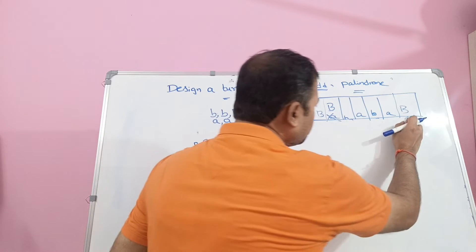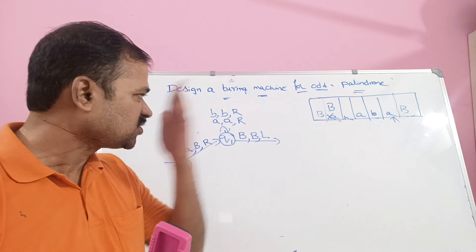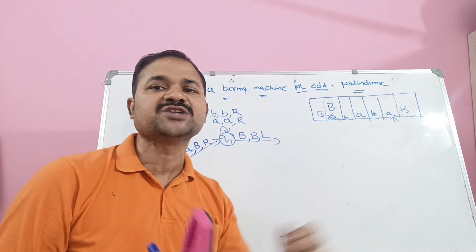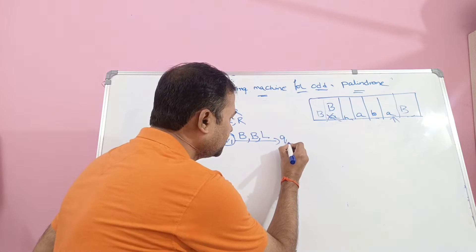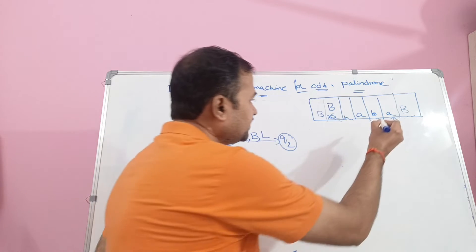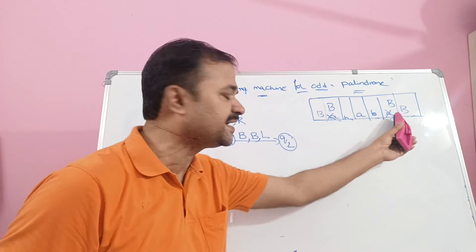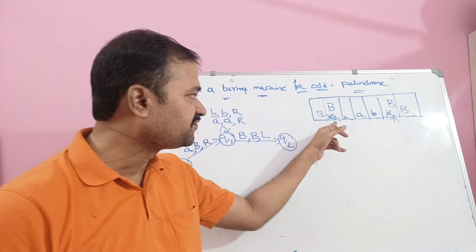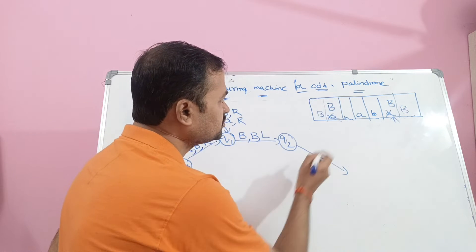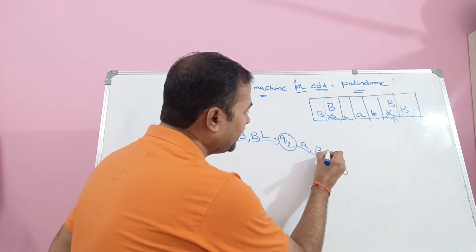Move the head one position to the left. Here, the leftmost symbol (starting symbol) is A, and the rightmost symbol (ending symbol) is also A. We are now at Q2 state. If we read A on Q2, convert this A into the blank symbol and move the head towards the left. Then change it to blank and move the head towards the left, entering Q3 state.